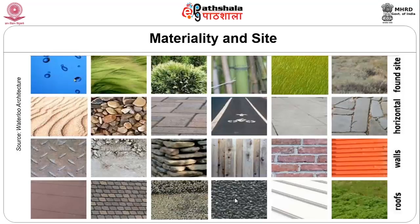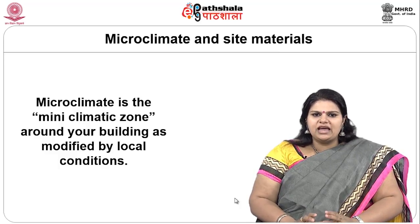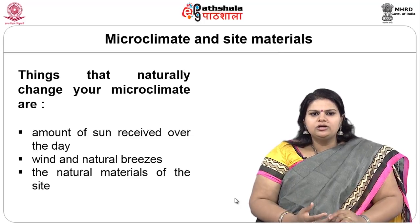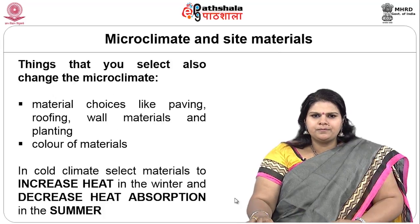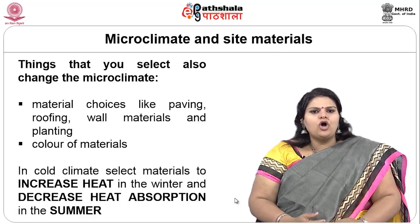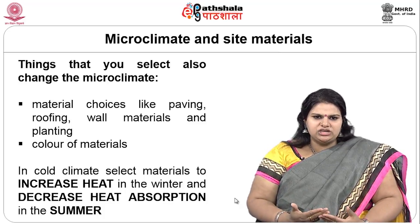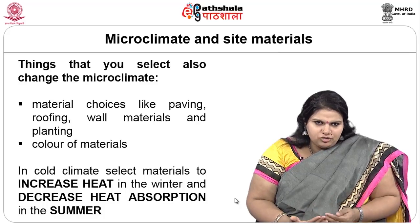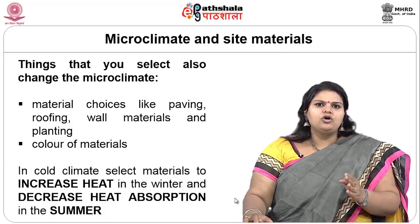So how do microclimate and site materials relate? Microclimate is the mini climatic zone around your building as modified by local conditions. Things that naturally change your microclimate are the amount of sun received over the day, wind and natural breezes, and the natural materials of the site. Things you select also change the microclimate — material choices like paving, roofing, wall materials, planting, and color of materials. In cold climates, you select materials to increase heat in winter and decrease heat absorption in summer. There is a very intrinsic relationship between site materials and microclimate.